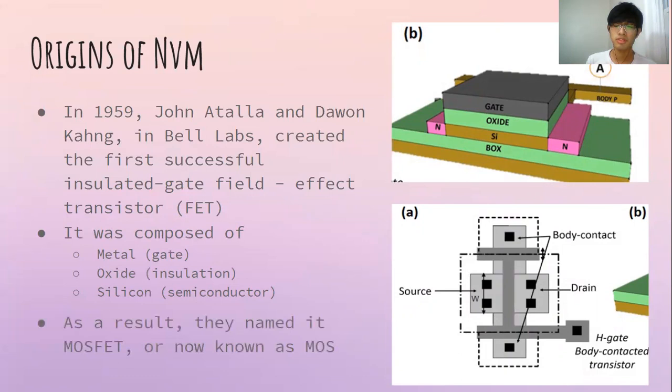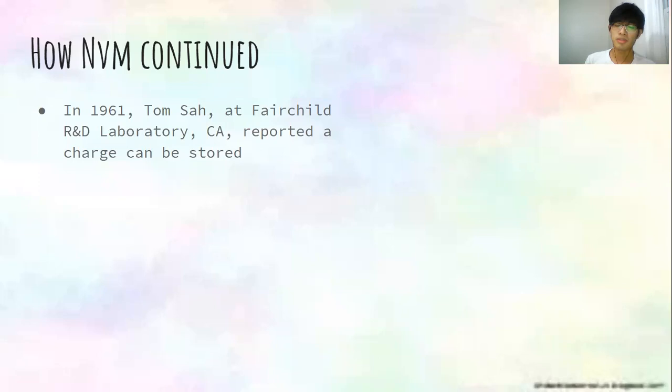These two researchers did not pursue MOSFET because during their time it was unreliable and inefficient. So in 1961, Tom Serra reported that a charge can be stored.